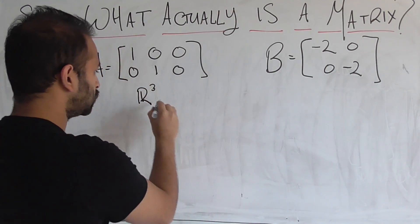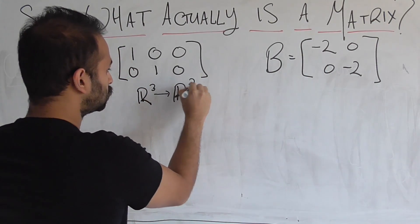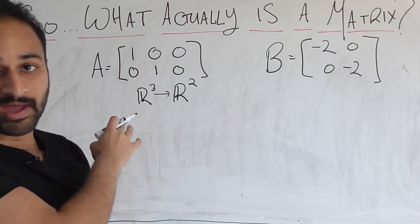So as we saw before from the math student's perspective of a matrix, this matrix here, A, is going to map a vector that lives in R^3, so three-dimensional space, onto a vector that lives in R^2, so two-dimensional space. So that's the role of that matrix A.